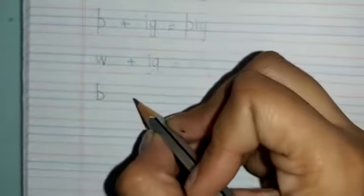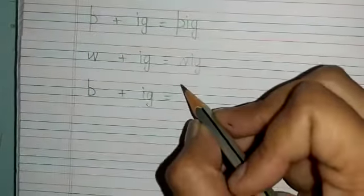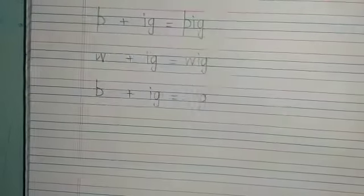And the last word is big. B plus IG. What word do we form? Big. B, I, G, big.